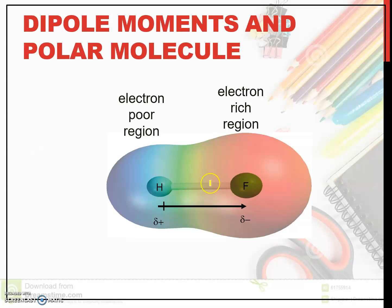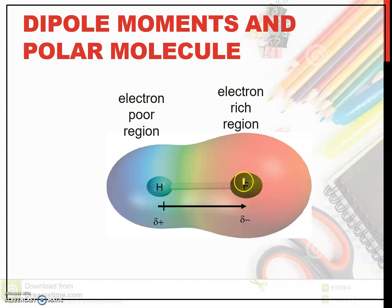This is a covalent bond where electrons are shared — one electron from hydrogen and one electron from chlorine. However, each atom has a different electronegativity, which makes the shared electrons attracted more towards chlorine.